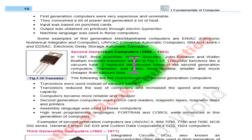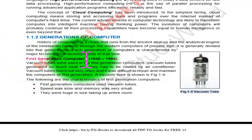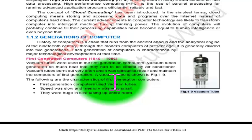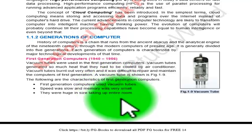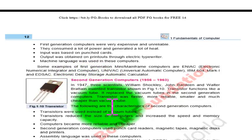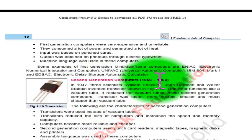In our previous video we discussed Chapter 1, the first generation computer, which was about 1940 to 1956. We discussed which tube was used in the first generation computer. Vacuum tubes were used, and the key points were: they used vacuum tubes, the speed was slow, and they were huge in size, taking up entire rooms. First generation computers were very expensive, consumed a lot of power, input was based on punch cards, output was obtained on printouts or typewriter, and machine language was used. Today we will discuss the second generation computer, which was about 1956 to 1963.